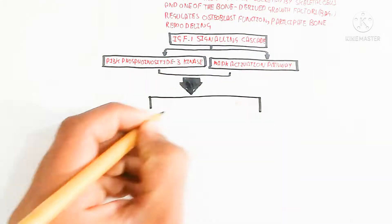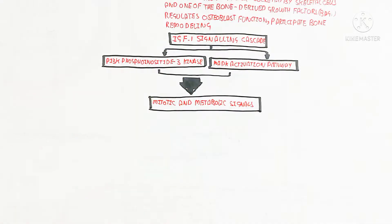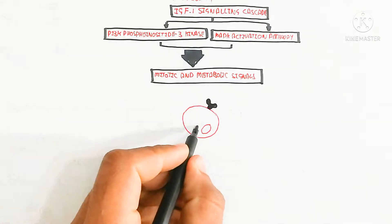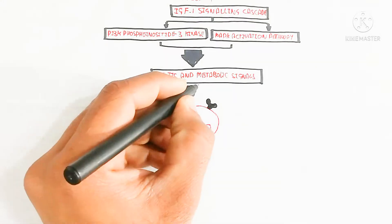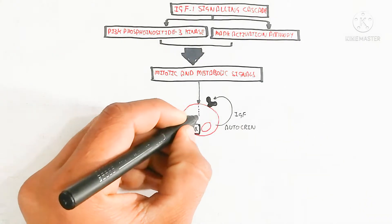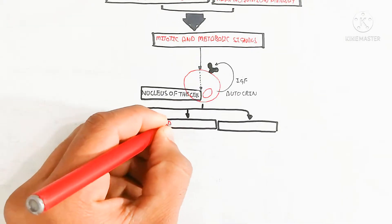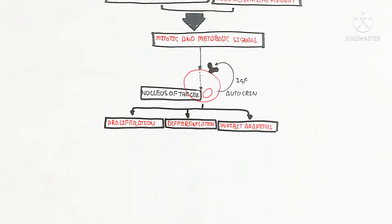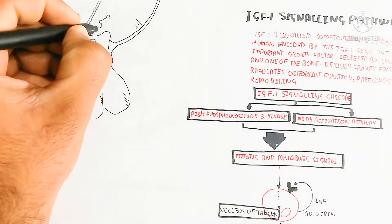Both are mitotic and metabolic signals. IGF-1 is produced by the nucleus of the cell and is stimulated by growth hormone. The cascade of phosphorylation leads to a transcriptional factor, and through autocrine signaling — from transcription to translation — IGF-1 is produced. It can act in an autocrine or paracrine manner to promote cell proliferation, differentiation, and inhibit apoptosis.